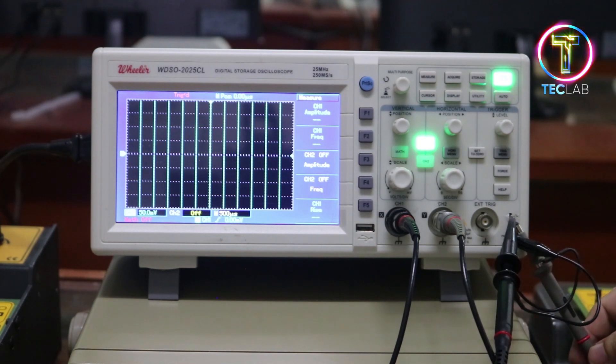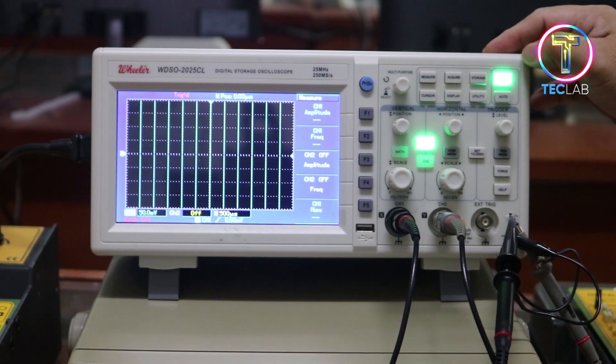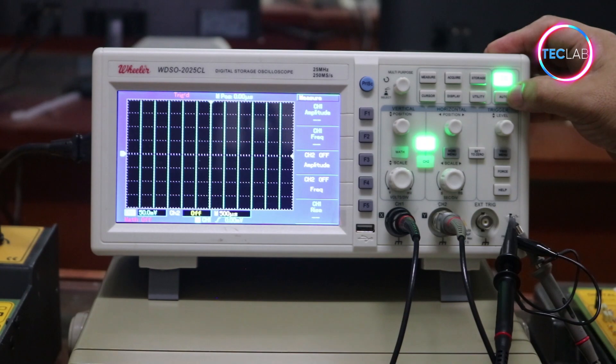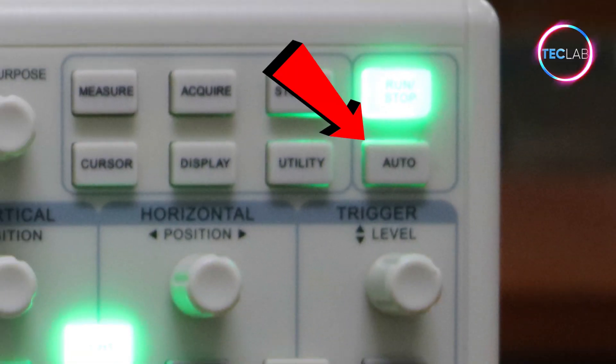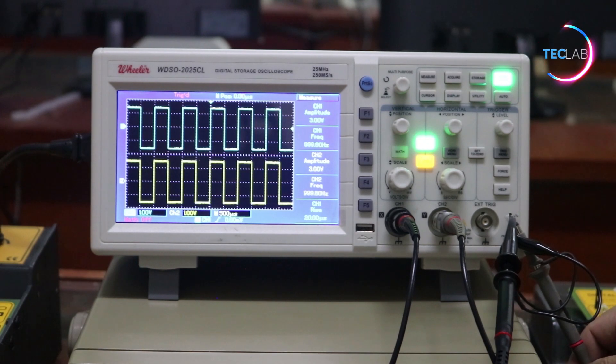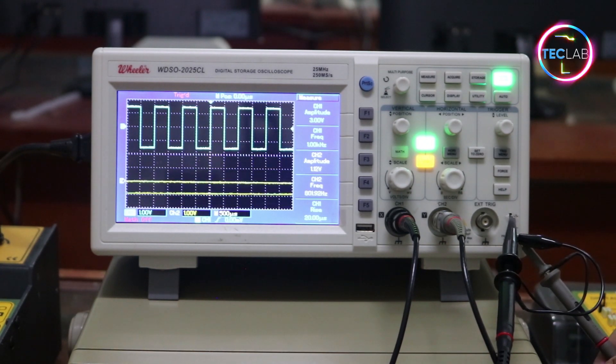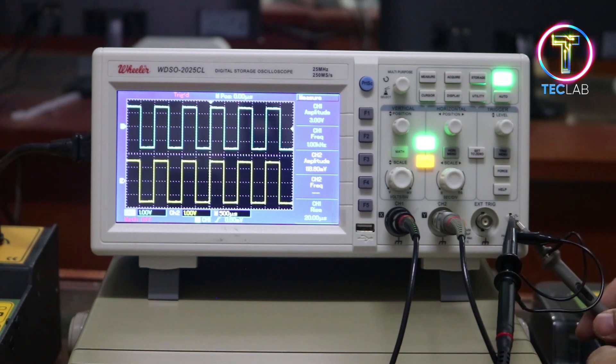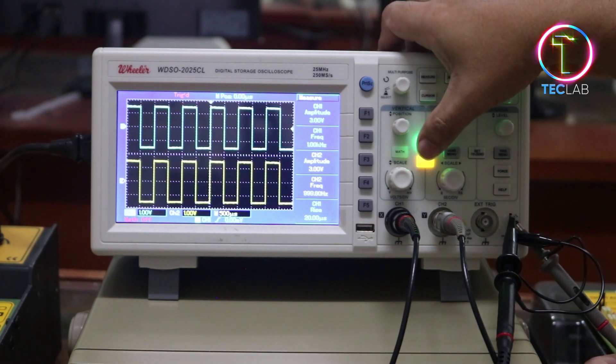Next, you need to press the auto button. The auto button is responsible for calibrating the signal within the signal of the oscilloscope. As you can see, we have here two signals for both channels, channel 1 and channel 2.